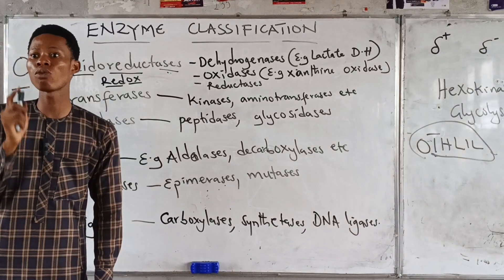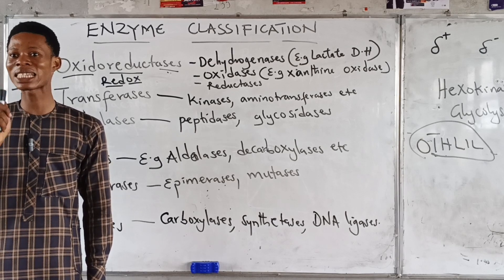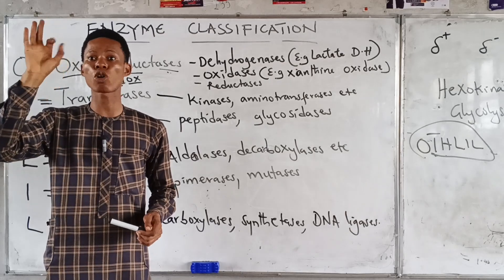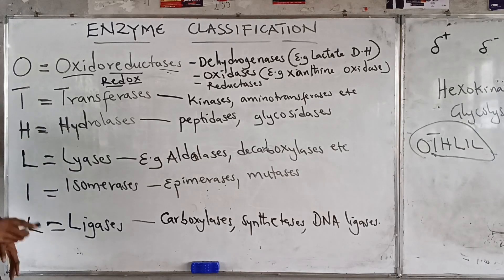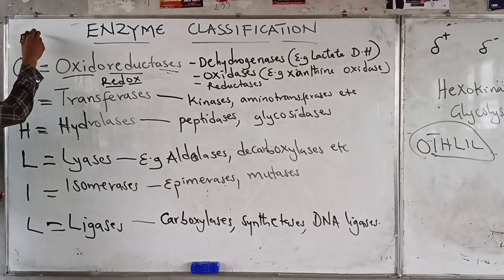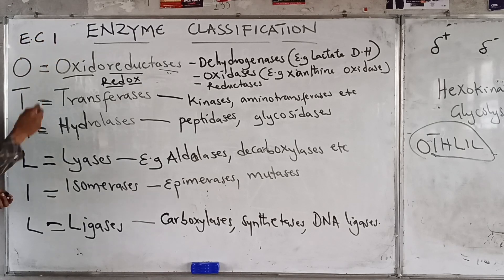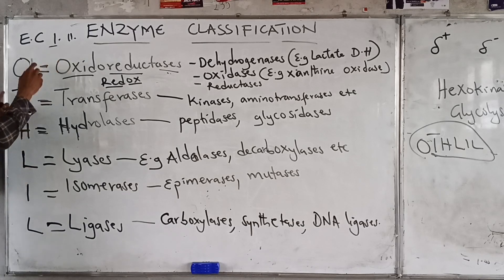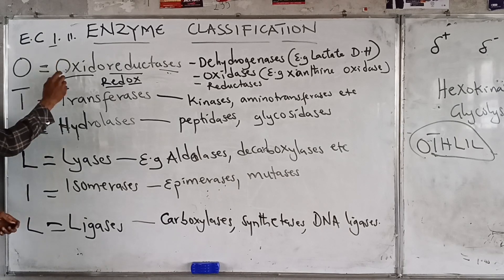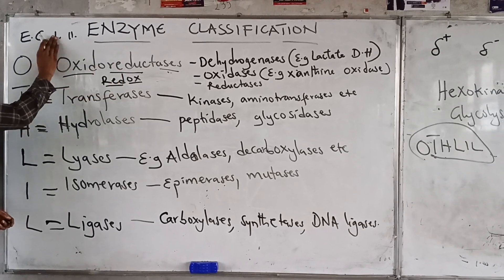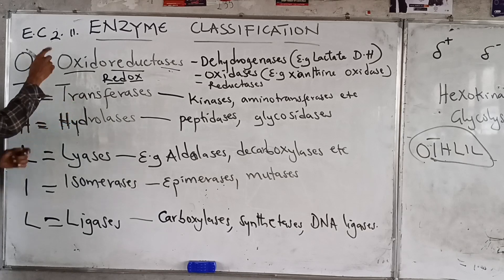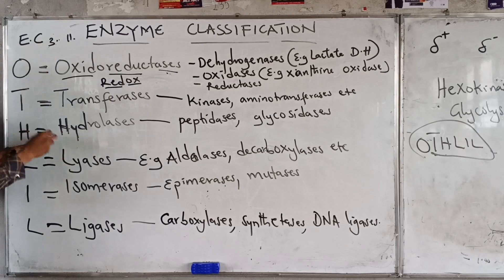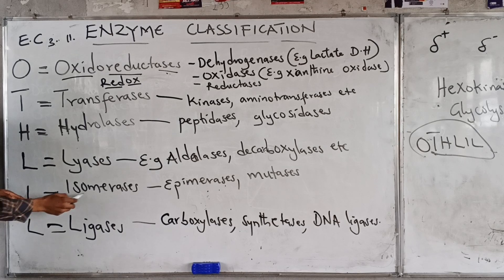In enzyme nomenclature, the EC number — enzyme commission number — has four digits. The first digit represents the class of the enzyme. If it is number one, the enzyme is an oxidoreductase. If two, it's a transferase. If three, hydrolase. If four, lyase. If five, isomerase. If six, ligase.